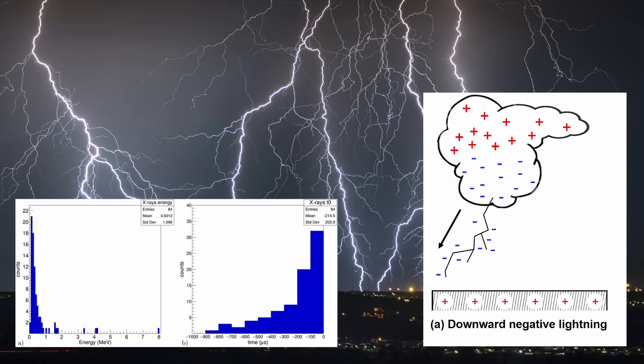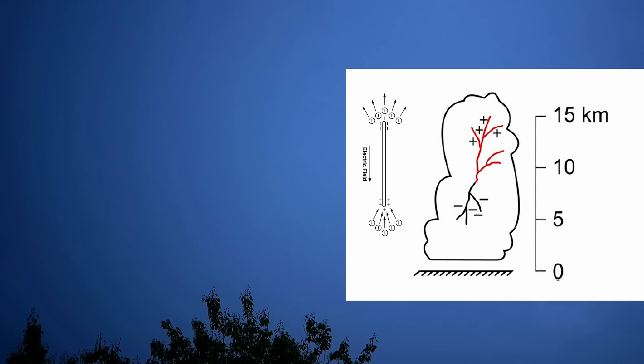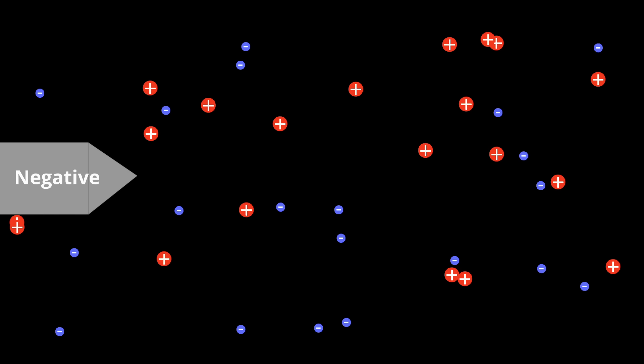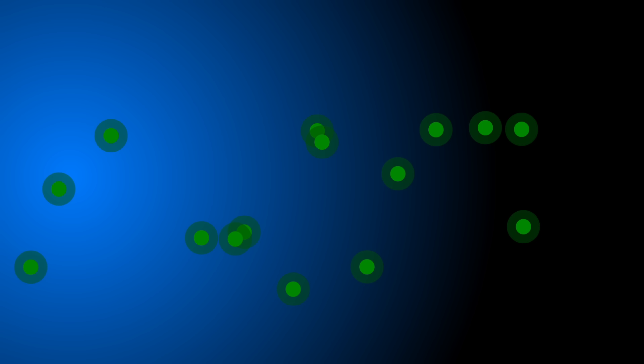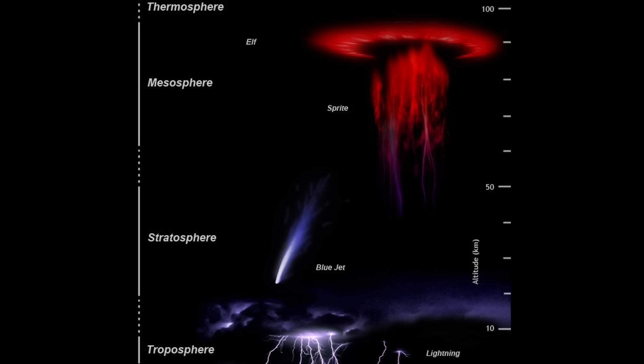When it comes to ground-level X-ray bursts, these phenomena are closely tied to descending leaders of negative polarity. On the flip side, gamma-ray bursts are more commonly associated with positive flashes, not necessarily ground strikes, but often manifesting a double-ended tree with a negative end positioned at the top. The key insight gleaned from these observations suggests that the negative end of the lightning tree is actively repelling electrons, which subsequently run away and generate X-ray bursts, propagating in the same direction as the accelerated electrons.